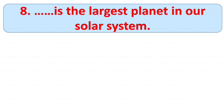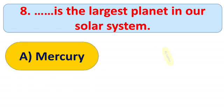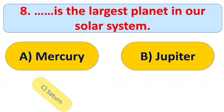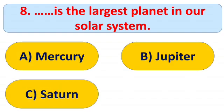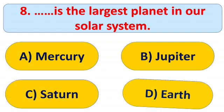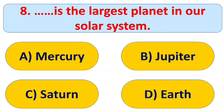Eighth question: blank is the largest planet in our solar system. Options: A) Mercury, B) Jupiter, C) Saturn, and D) Earth. The right answer is B) Jupiter. Jupiter is the largest planet in our solar system, and the second largest planet is Saturn.